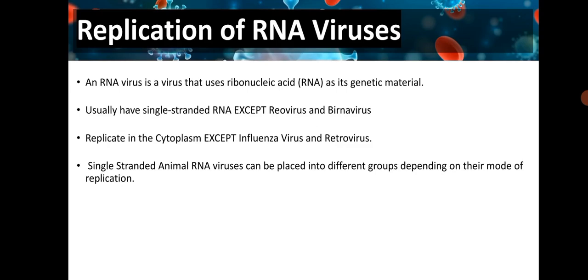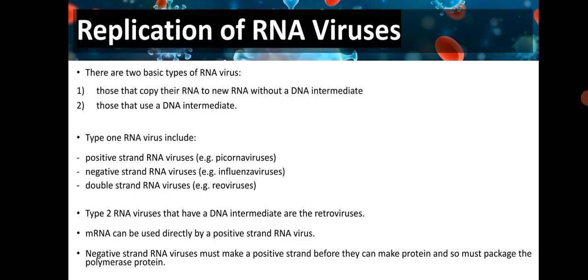Replication of RNA viruses: an RNA virus uses ribonucleic acid as genetic material, usually single-stranded RNA except riovirus and birna virus, and replicates in the cytoplasm except influenza virus and retrovirus. Single-stranded RNA viruses fall into different groups depending on their mode of replication. There are two basic types: type 1 copies RNA to new RNA without a DNA intermediate, including positive-stranded, negative-stranded, and double-stranded RNA viruses. Type 2 uses a DNA intermediate and includes the retroviruses.